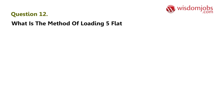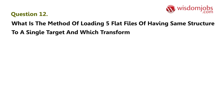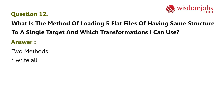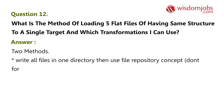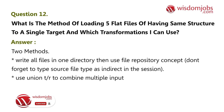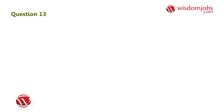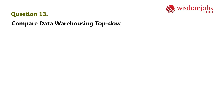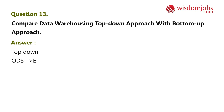Question 12: What is the method of loading five flat files having the same structure to a single target, and which transformations can you use? Answer: Two methods: First, write all files in one directory and use the file repository concept — set the source file type as 'indirect' in the session. Second, use a Union transformation to combine multiple input files into a single target.